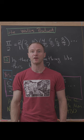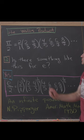That says that pi over 2 is equal to 2 over 1 times 2 over 3 times 4 over 3 and then a bunch of other terms.